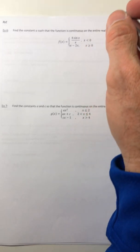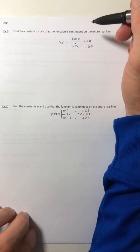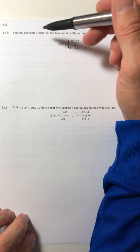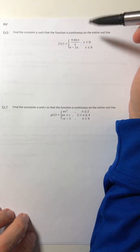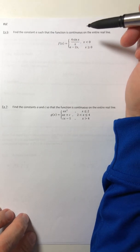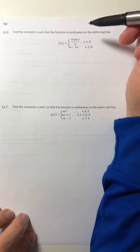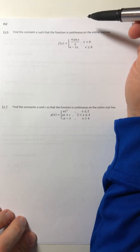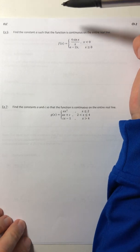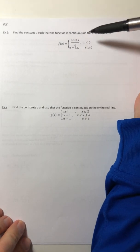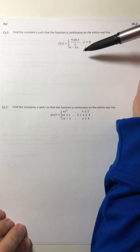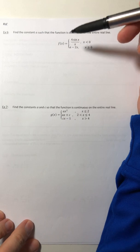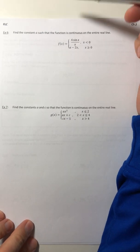We are going to conclude section 2.4 with a couple of examples that are a little trickier, at least in how they look. Sometimes things look worse than they really are, and this would be one of them.